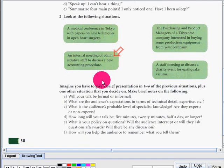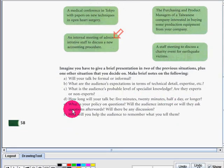These are the things that you have to consider: Will your talk be formal or informal? What are the audience's expectations in terms of technical detail, expertise, etc.? What is the audience's probable level of specialist knowledge? Are they experts or non-experts? How long will your talk be? Five minutes, 20 minutes, half a day, or longer? What is your policy on questions? Will the audience interrupt or will they ask questions afterwards? Will there be any discussion?